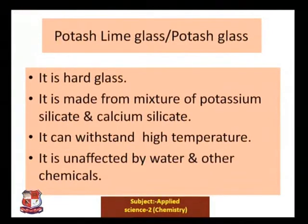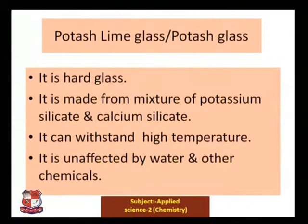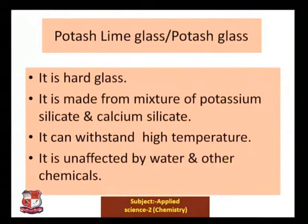The second type is potash lime glass, also called potash glass. It is a hard glass made from a mixture of potassium silicate and calcium silicate. It can withstand high temperatures and is unaffected by water and other chemicals.